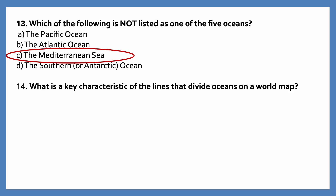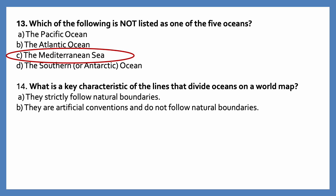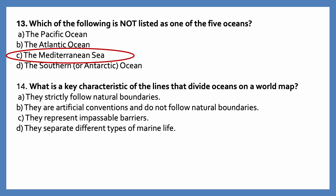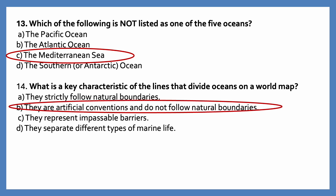What is a key characteristic of the lines that divide oceans on a world map? Options are: they strictly follow natural boundaries; they are artificial conventions and do not follow natural boundaries; they represent impassable barriers; they separate different types of marine life. The correct answer is they are artificial conventions and do not follow natural boundaries.